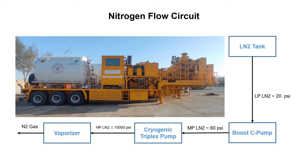This gaseous nitrogen is ultimately pumped into the well. This is the discharge line which is then connected to the pumping line, which is ultimately connected to the well for its pumping. This was the brief discussion about nitrogen flow path or nitrogen flow circuit in a typical nitrogen pumping unit.